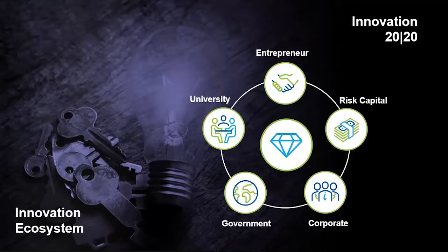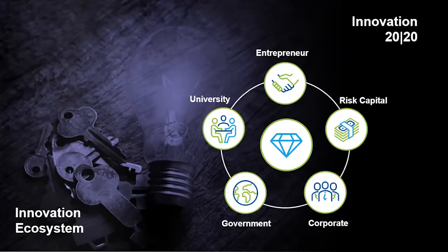Let's take a look at the innovation ecosystem, which has five connected elements that we need to leverage: the entrepreneurial infrastructure, the risk capital, the corporate resources, government, and universities. This is about leveraging all of these components together — the collective wisdom to enable value delivery, where the whole is greater than the sum of the individual parts. This is about open innovation, which is market-driven and an outside-in approach, rather than an inside-out approach to innovation.